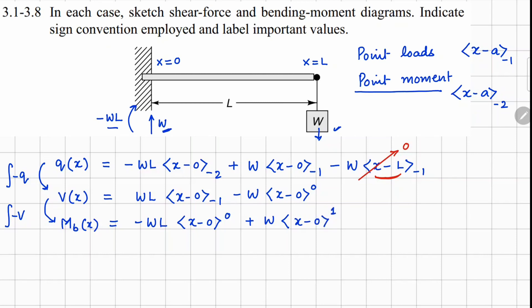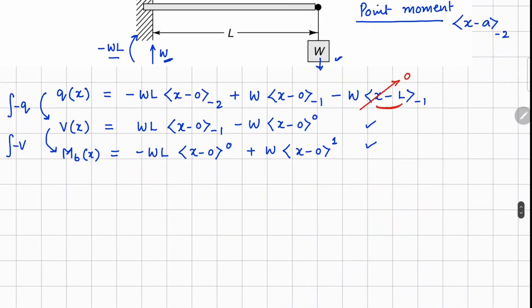Now we've got the functions here, so let's evaluate these functions. For the beam, your x is between 0 to L, so this is always going to be a positive number. So this function right here gives us minus W. The second part to this is WL times (x minus 0) to the minus 1.